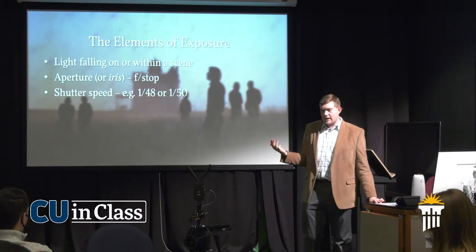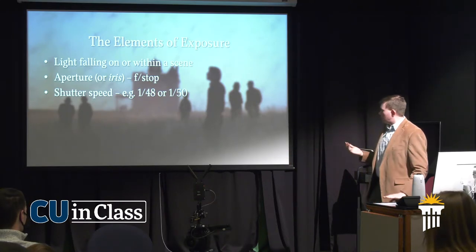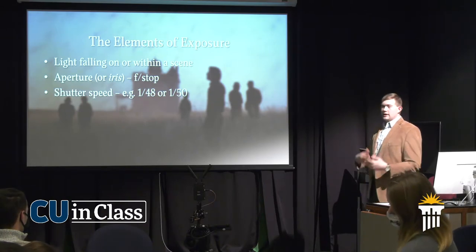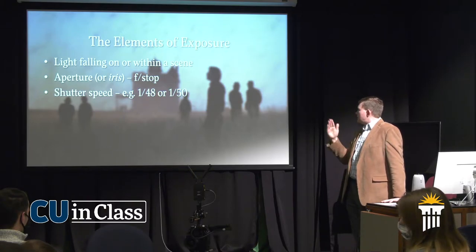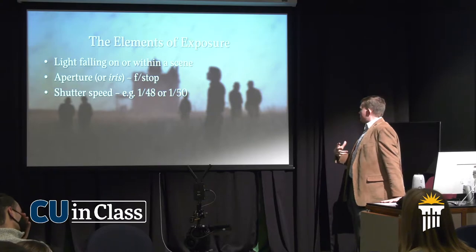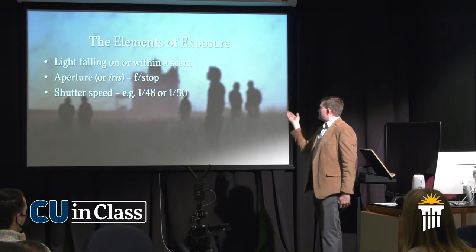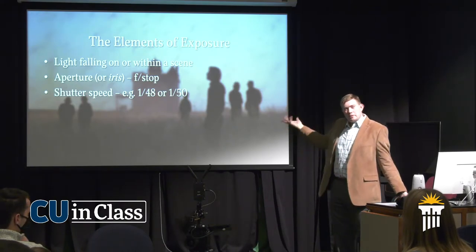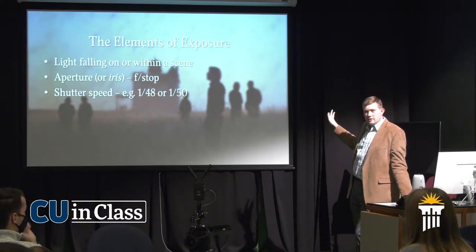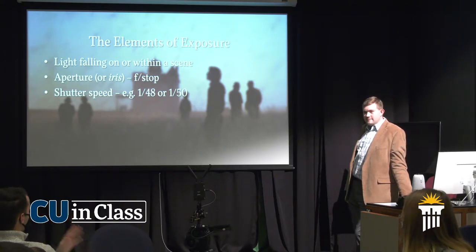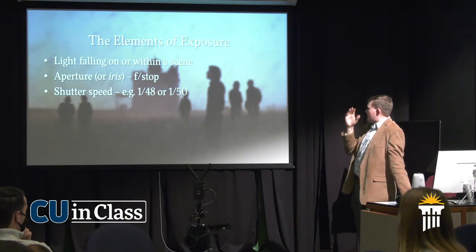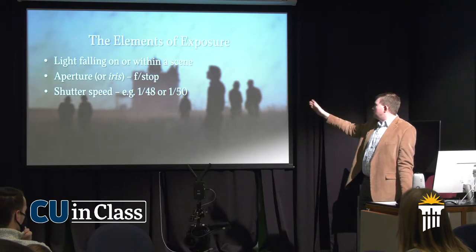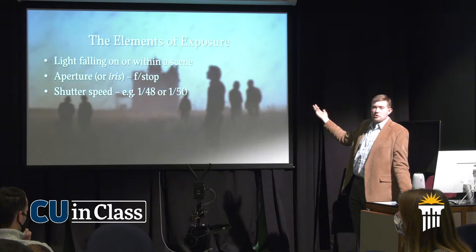Then shutter speed refers to the mechanics inside the camera that each millisecond or whatever takes — snaps the picture, closes, and then opens back up to capture light. For digital video cameras it looks slightly different, but the effect is still there. It's measured in fractions — one over 48 or one over 50. That means one forty-eighth of a second is the length of time it takes for the camera to snap. What happens if that denominator is a low number, like one over 30 or one over 20? Really bright, but a lot of blur.